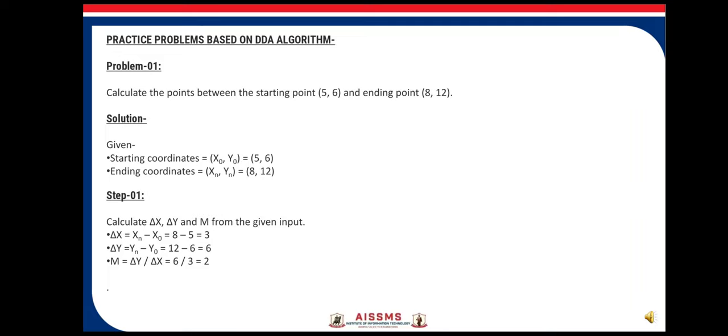Next is a practice problem. Suppose we calculate the points between starting point (5, 6) and ending point (8, 12). We have to follow the steps. First, calculate the differences between the x and y coordinates, then with the help of these differences we can find out the slope. Delta x equals xn minus x0, that is 8 minus 5 equals 3. Delta y equals yn minus y0, that is 12 minus 6 equals 6. And the slope m equals delta y upon delta x, which is 6 divided by 3, that means 2.